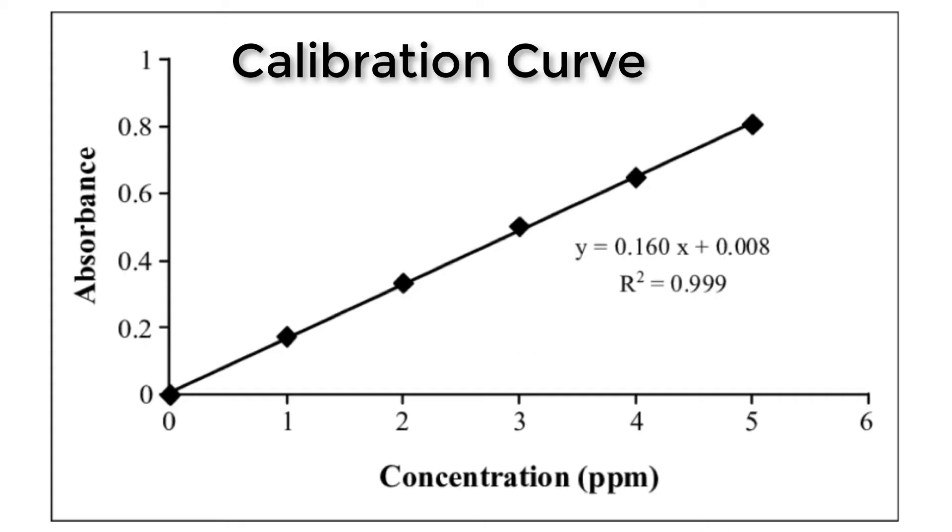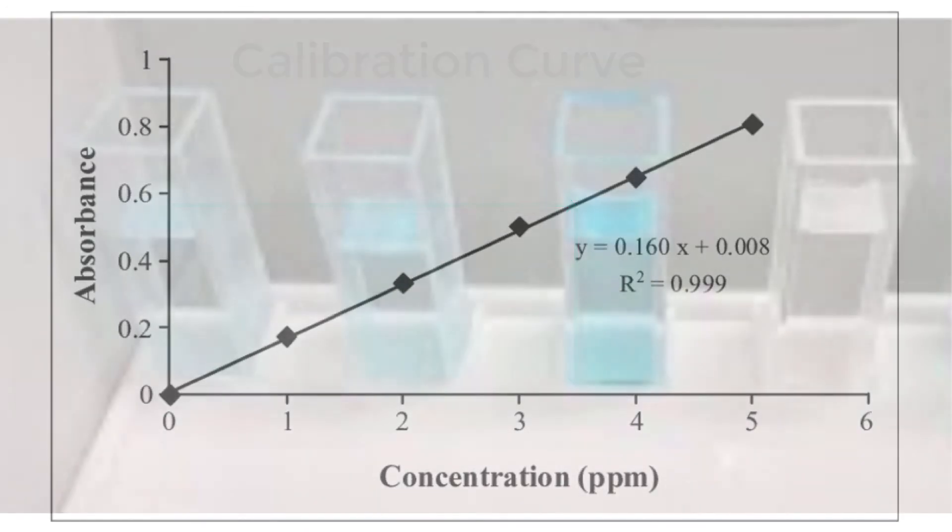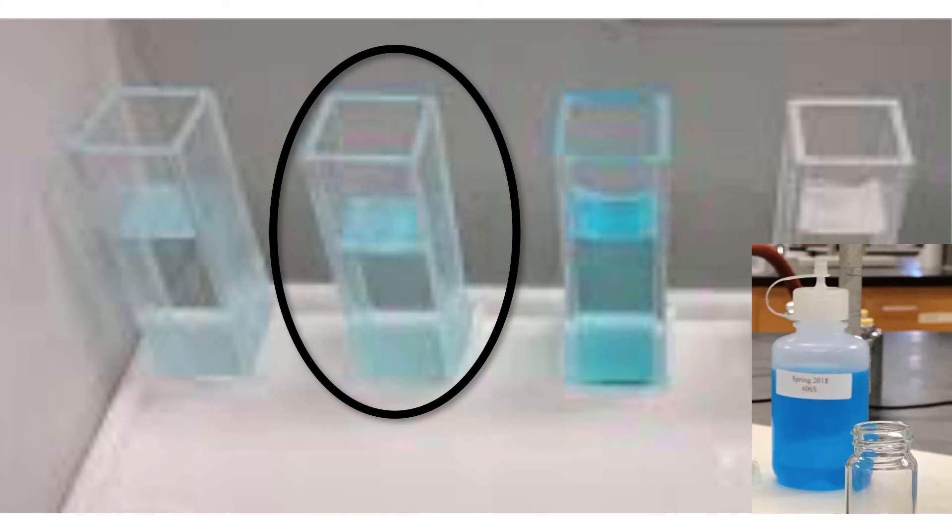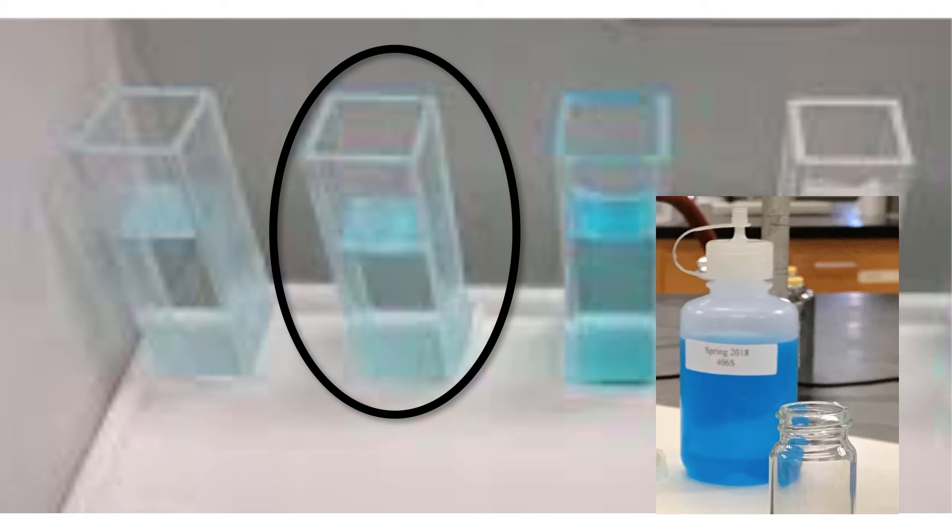Your calibration curve will be a plot of absorbance versus concentration. Check for linearity, and use linear regression to solve for the concentration of your unknown. Remember that you just determined the concentration of the sample in your cuvette, not the original unknown sample we used to prepare this dilution. You'll have to back-calculate.